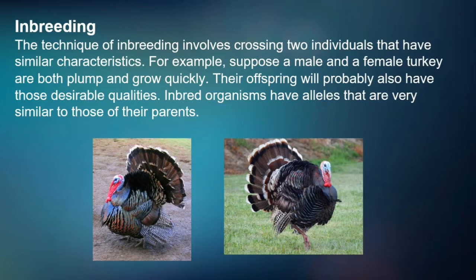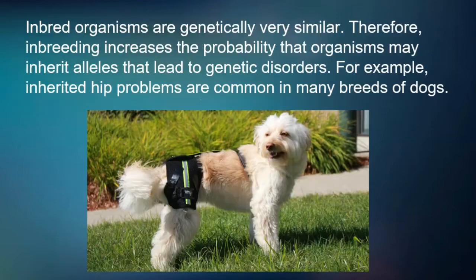Inbreeding. The technique of inbreeding involves crossing two individuals that have similar characteristics. For example, suppose a male and a female turkey are both plump and grow quickly. Their offspring will probably also have those desirable traits. Inbred organisms have alleles that are very similar to those of their parents, and are genetically very similar. Therefore, inbreeding increases the probability that organisms may inherit alleles that lead to genetic disorders. For example, inherited hip problems are common in many breeds of dogs.